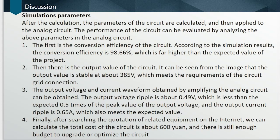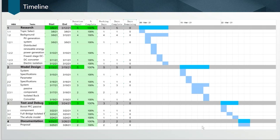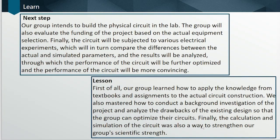After calculation and simulation, we obtained the results of the analog circuit. The conversion efficiency is more than 98%, far higher than the expected value. The output voltage is stable at about 385V, which meets the requirements. Considering the potential drop in the actual line, a slightly higher output voltage is acceptable. The output voltage ripple is about 0.49V, and the output current ripple is about 0.65A. Both values meet the expected requirements. After searching for related equipment online, we calculated the total cost of our circuit to be about 600 yuan.